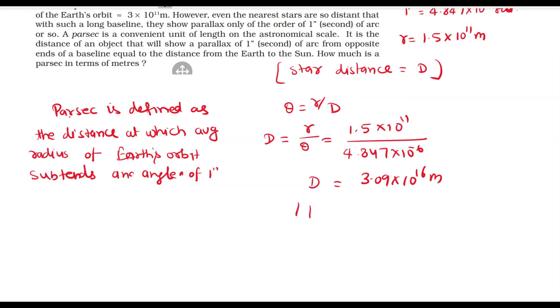तो d यह हमारे पास 1 parsec की value है. तो 1 parsec is equal to 3.09 × 10^16 meter.